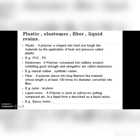The fourth classification covers plastics, elastomers, fibers, and liquid resins. Plastics are polymers shaped into hard and tough materials by the application of heat and pressure. Examples are polyvinyl chloride and polystyrene. Elastomers are polymers that are vulcanized into a rubbery product exhibiting good strength and elongation. Natural rubber and synthetic rubber are elastomers.